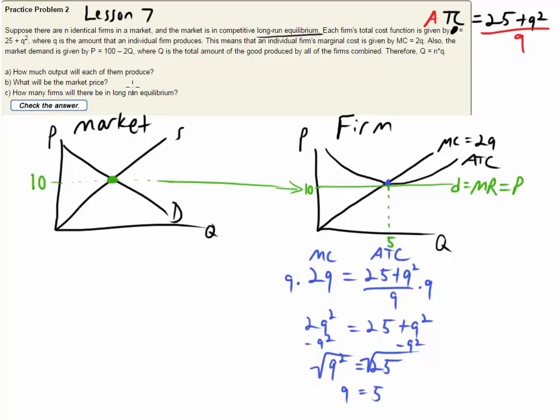Now, how many firms will there be in long-run equilibrium? Well, each firm makes 5. How much does the market make?